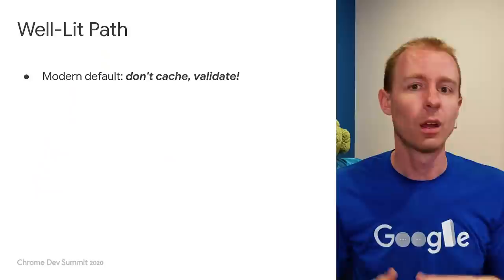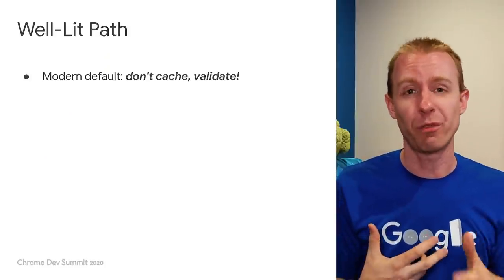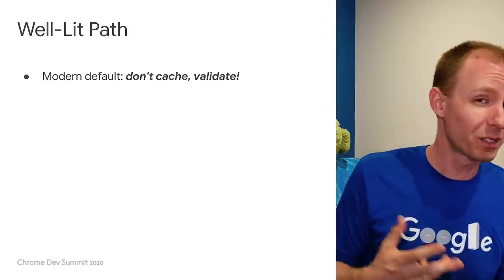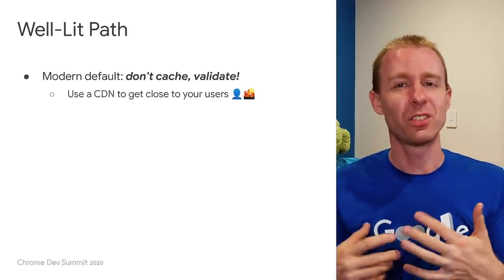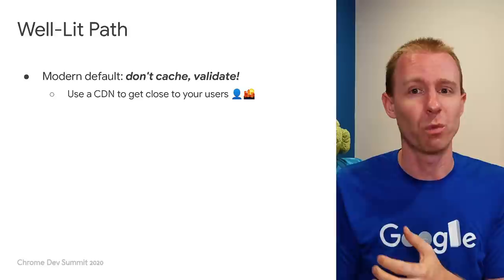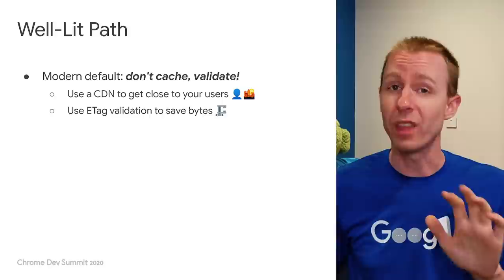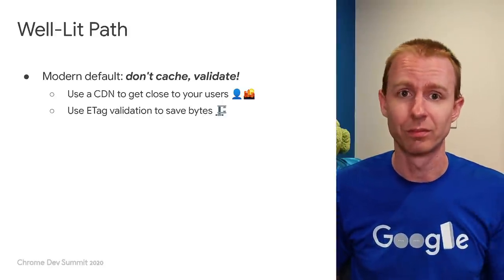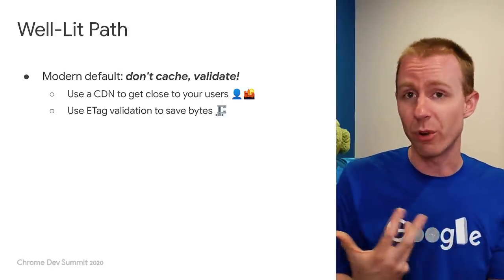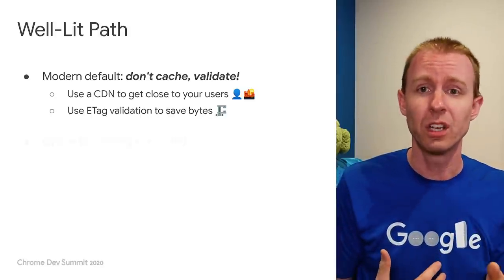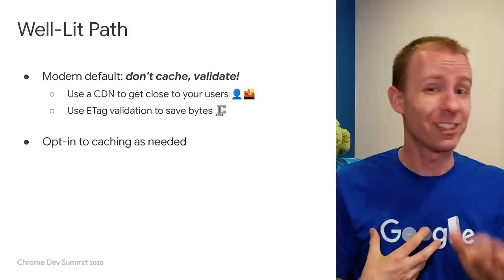What I want to fundamentally propose in this talk is a well-lit path for caching that will benefit users on their second load. We honestly think that a sensible default for caching is actually to not cache by default. I suggest using a CDN — a globally distributed way to bring your content close to your users — and use validation to make sure your site is up to date without transferring it completely. You can then opt in to better caching rules as you need them.